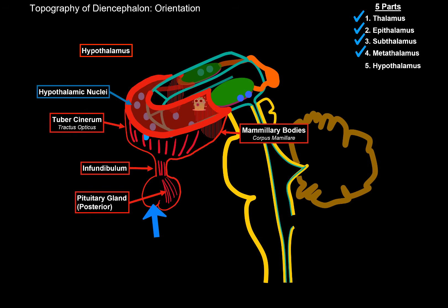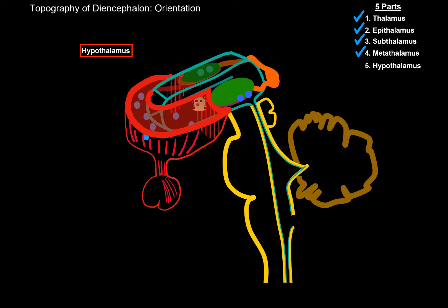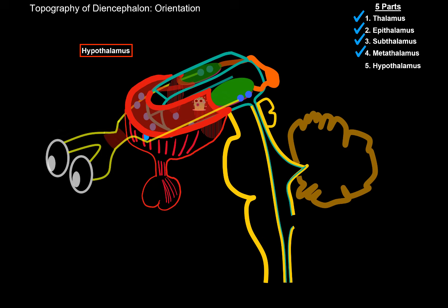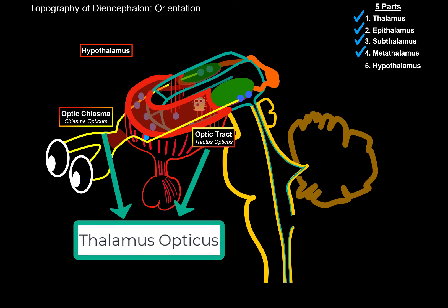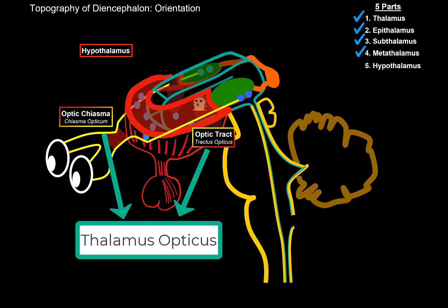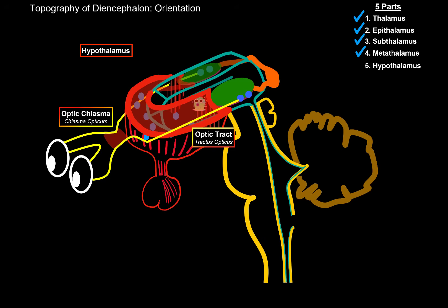The anterior part of the pituitary gland is not considered part of the hypothalamus, since it's glandular, meaning it has a different origin during development. Other parts considered part of the hypothalamus are the optic chiasm and the optic tract. Some sources say they are their own part of the diencephalon, called the thalamus opticus, but in this video we'll count them as part of the hypothalamus.